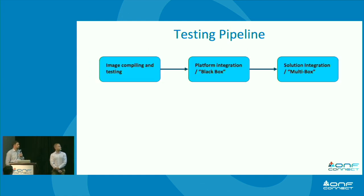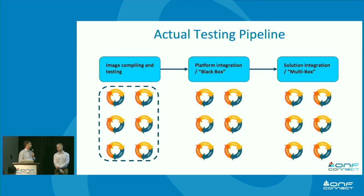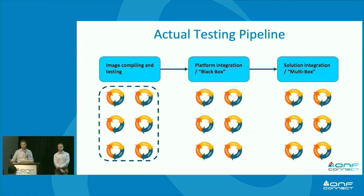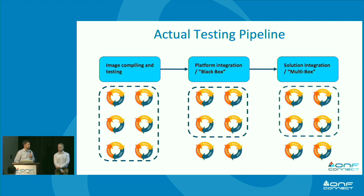This is the testing pipeline — it's this easy: you file the image, you test that, then you do some platform integration testing, smooth and easy. Then make sure we do a little solution integration, make sure our routing works. In reality, there are a lot of iterations at each cycle. The software image itself is done virtually, and our thought is that a significant portion of the platform testing and the solution testing can also be done virtually.